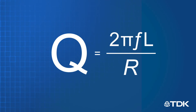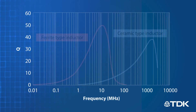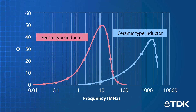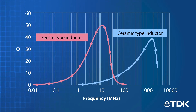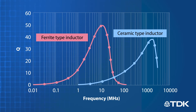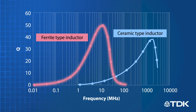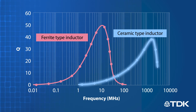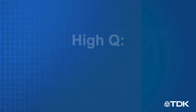Because the frequency of the current flowing through the coil affects inductive reactance, the Q value will differ according to frequency. Inductors with different substrates will also have different Q values. For example, ferrite inductors can typically only be used into the low megahertz range, while ceramic-based inductors can be used into the hundreds of megahertz.